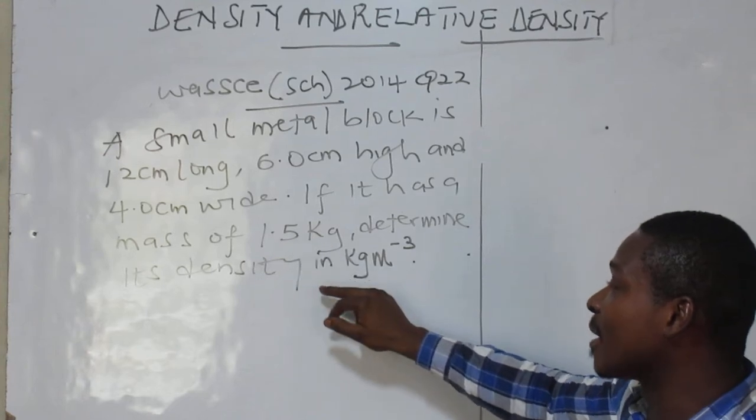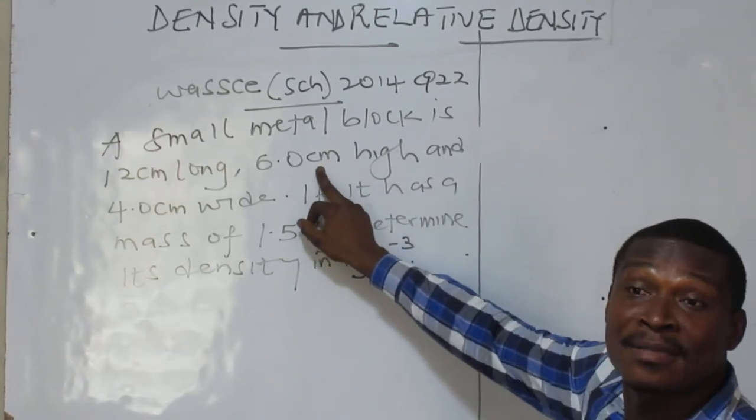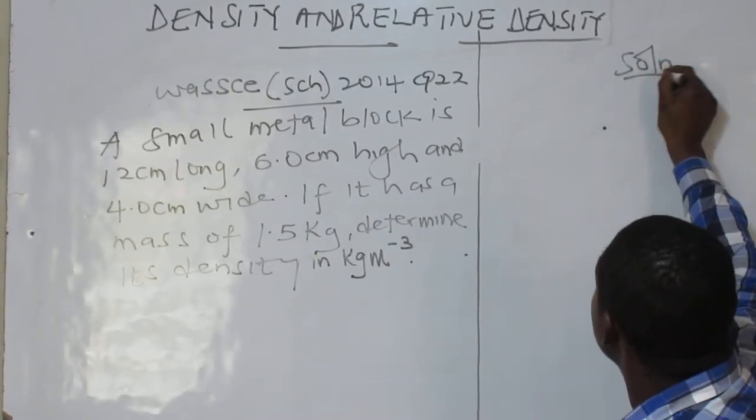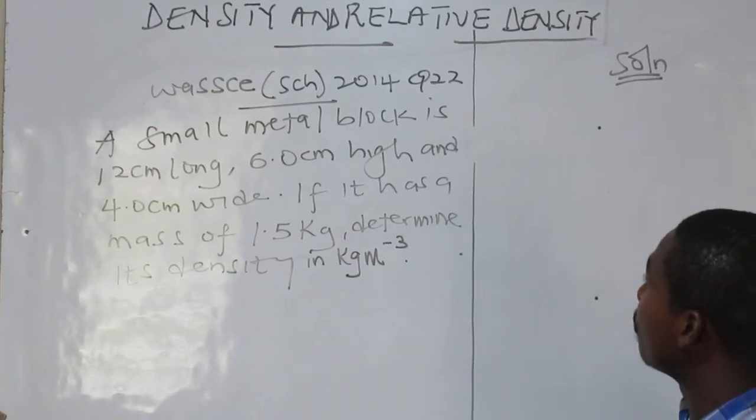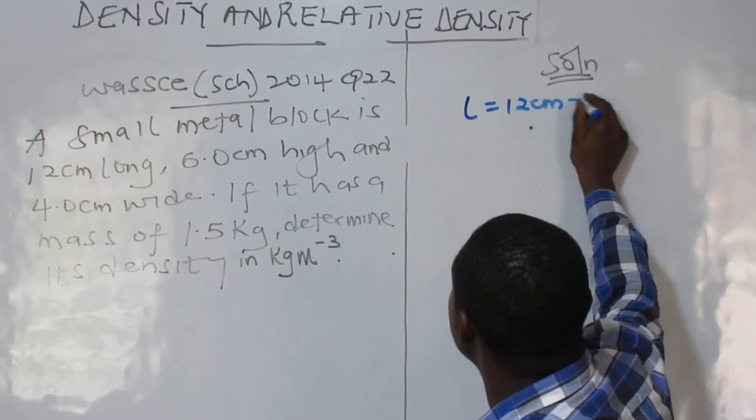We have the mass and we have to determine our density in kg per cubic meter. Meanwhile, we have our volume terms in cm cubed. Now here is the first thing to do. So, we will convert this length to meter.